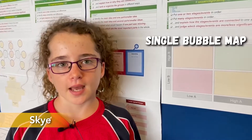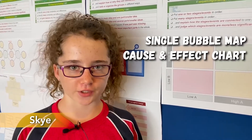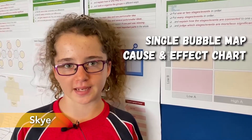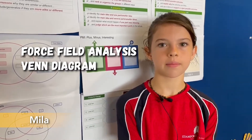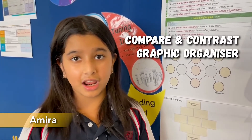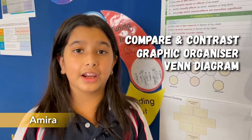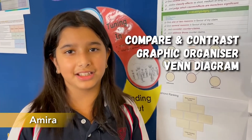During the making connections unit, I used a single bubble map and a cause and effect chart to record my information. Some of the tools I used were a force field analysis and a three-way Venn diagram. Others used a compare and contrast graphic organizer and a Venn diagram to compare different ideas.